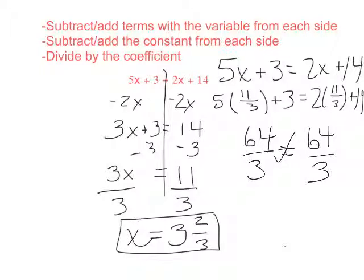So that means when I use 3 and 2 thirds and put it in for x, I get the same value on both sides — that's my check. I hope this helped you with the steps and how to show the syntax and maybe why we're doing what we're doing in class. Keep practicing. Thanks. Bye.